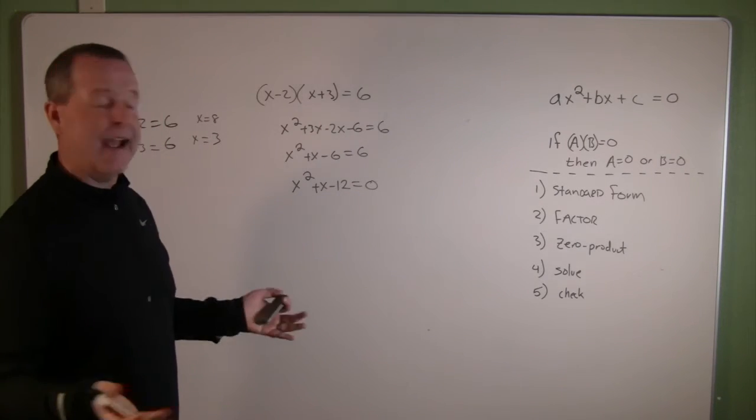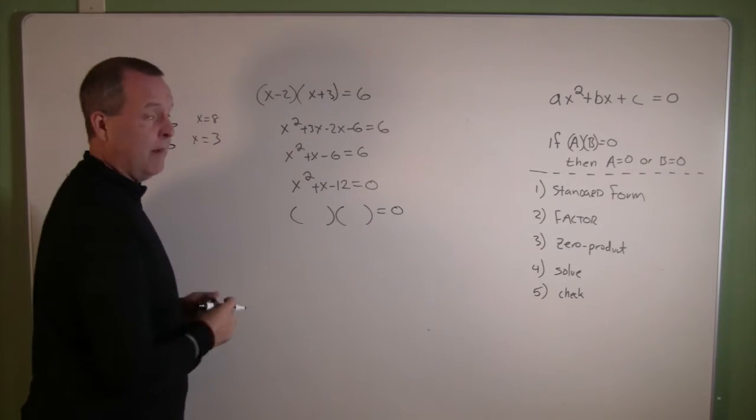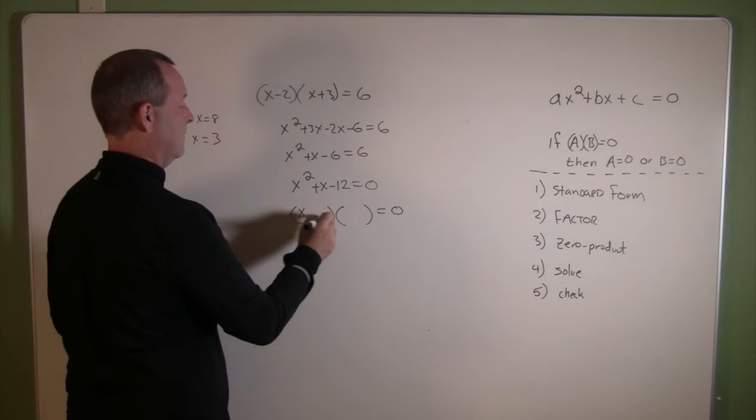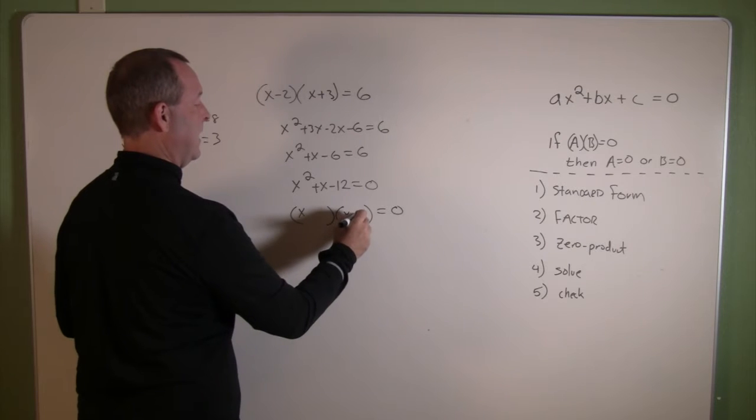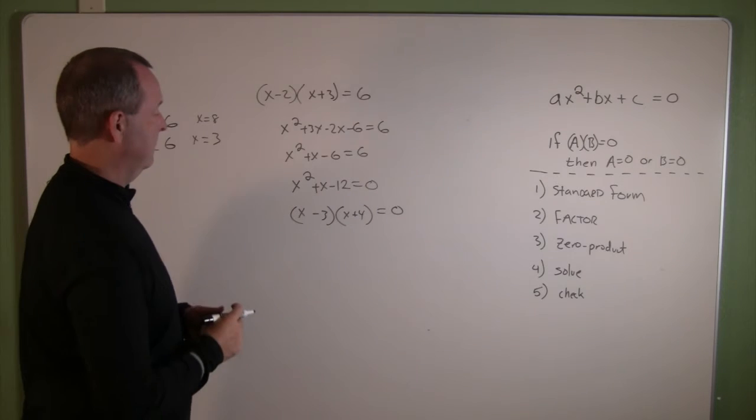So let's factor that out. Looks like trial and error for factorization. Notice that I'm still making sure I set it equal to zero. And it looks like it's going to be positive 4 and negative 3 are my factors.